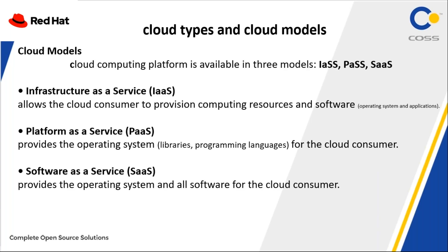After that, we should talk about models of cloud computing. Cloud computing will be available in three models. Infrastructure as a Service allows the cloud consumer to provision computing resources and software — whatever you want, you can do it entirely. This is infrastructure as a service. We allow anyone to access and do whatever they want: create instance, choose operating system, install application.